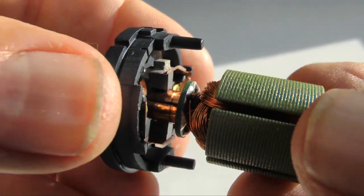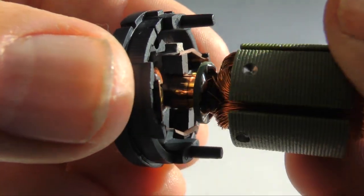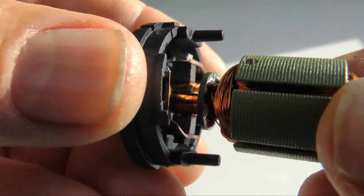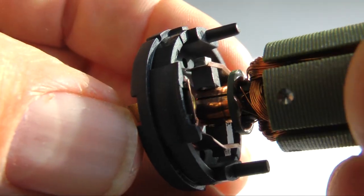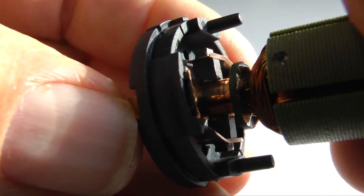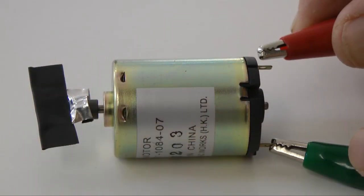As the commutator rotates, the contact points change. This changes the polarity of the coil magnetic fields, creating a powerful push-pull interaction with the permanent magnets. A push-pull that creates rotary motion.